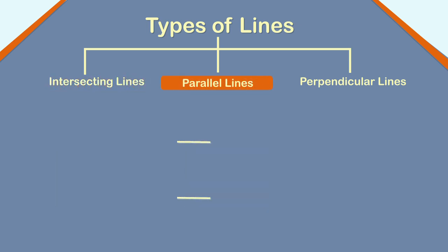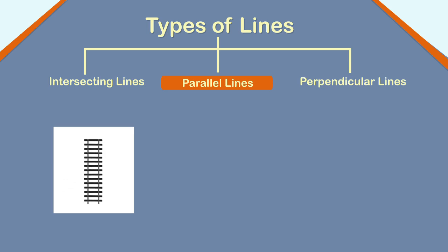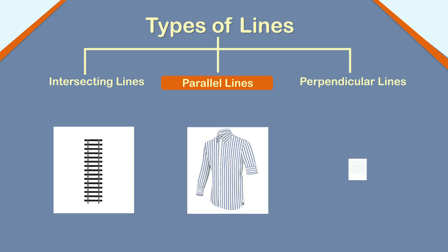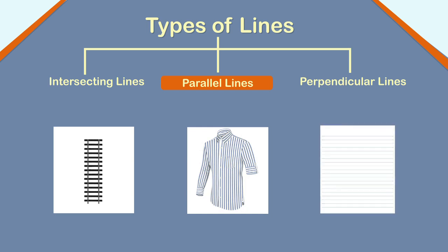Lines which never meet and are always at an equal distance from each other are called parallel lines. Here, line AB and line CD are parallel to each other as they are at an equal distance from each other and they do not meet. The railway track is a great example of parallel lines. Other examples are stripes on a shirt and the lines on the page of a notebook.